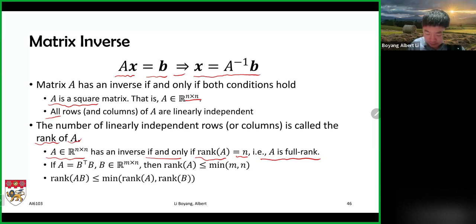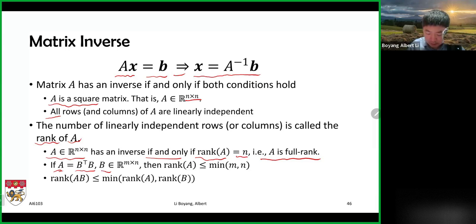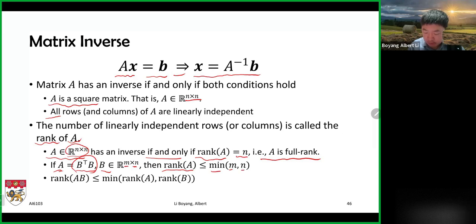Property one: if A is the product of a matrix and its transpose — say B-transpose times B — where B has m rows and n columns, then B-transpose B is n by n, and the rank of A is the smaller of m or n. This is really important because we'll be looking at the inverse of X-transpose X.